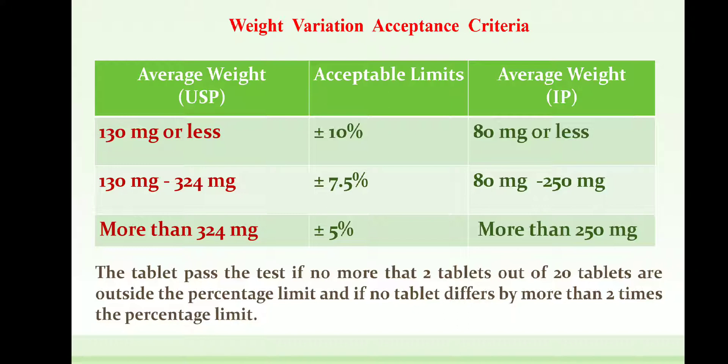The tablet passes the test if no more than 2 tablets out of 20 are outside the percentage limit, and if no tablet differs by more than 2 times the accepted percentage limit. So, out of 20 tablets, 18 must pass within the percentage limit, and the other 2 tablets should not deviate more than twice the accepted limits.